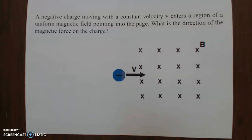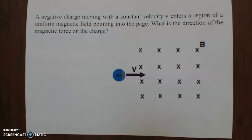The only trick here is that we will pretend it is a positive charge. The thumb will align with the velocity, the four fingers with the magnetic field, and the palm will point to the direction of the magnetic force. However, because it's a negative charge, we will take the opposite side — the back of our hand — to show the direction of the magnetic force.